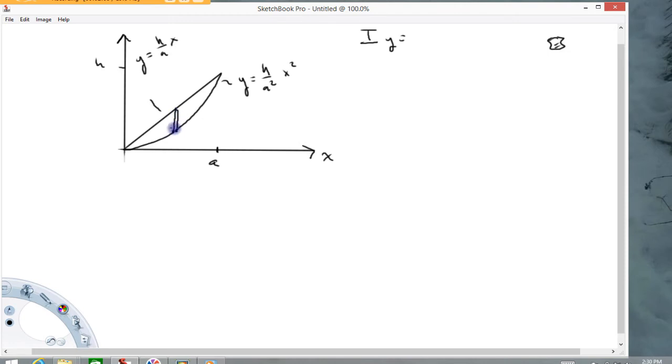And it's important to realize the dimensions of this element. So the thickness of this element is going to be a dx. And then the length of this element we're also going to need, that's going to be this distance in this problem. And that's going to be this distance minus this distance. So that's going to be equal to this function. So I'll put length of the rectangle is going to equal h over a times x minus the bottom function, h over a squared x squared.